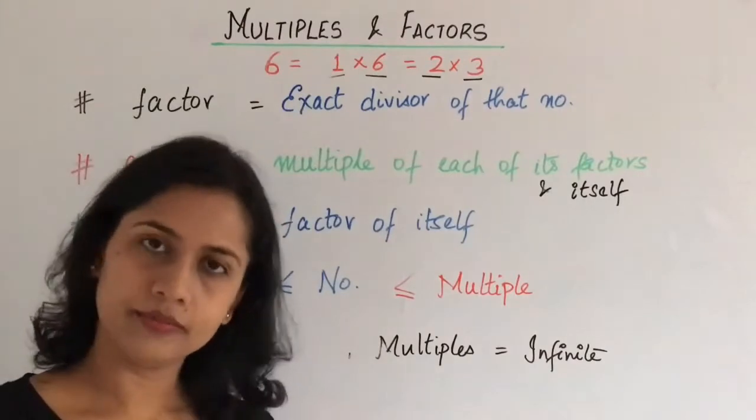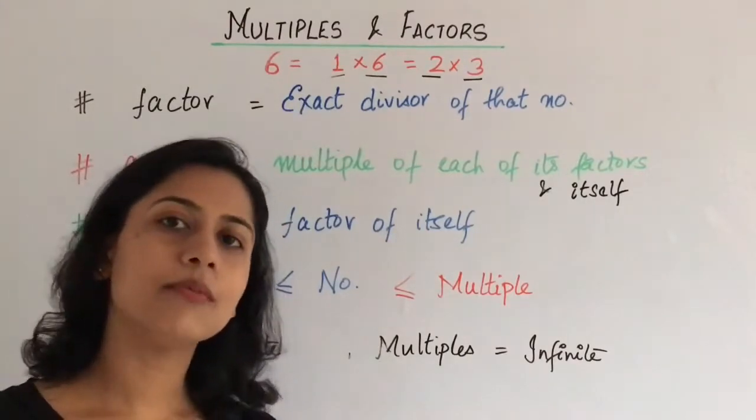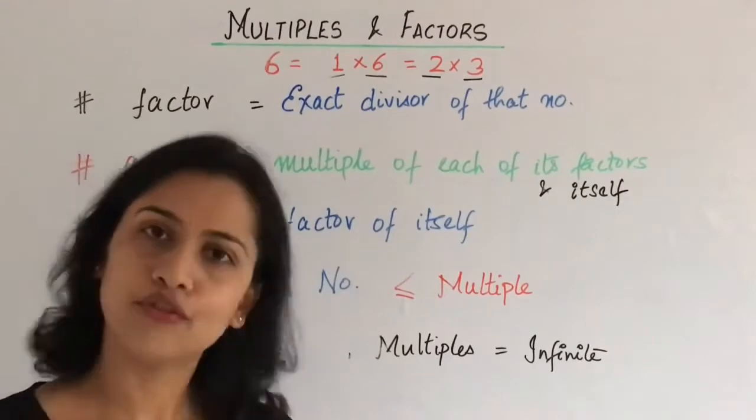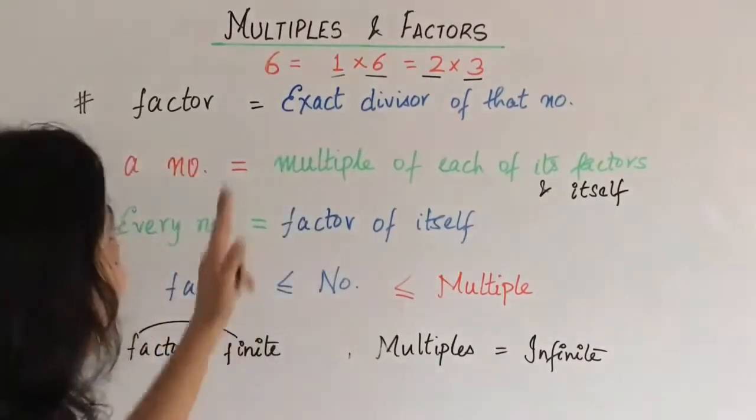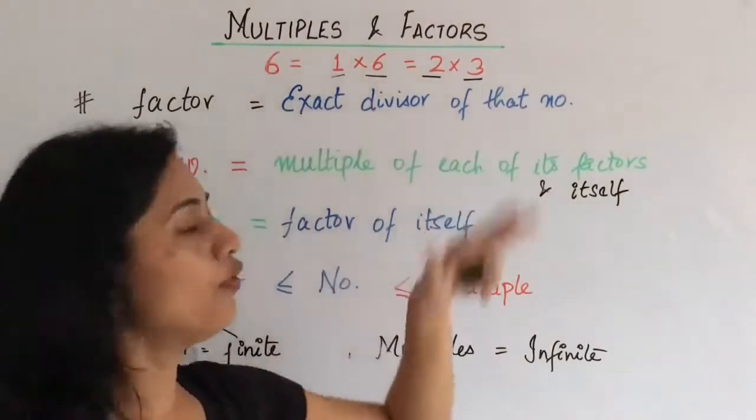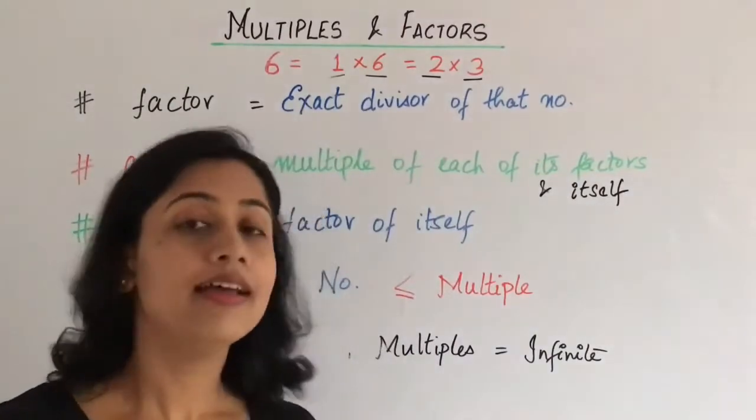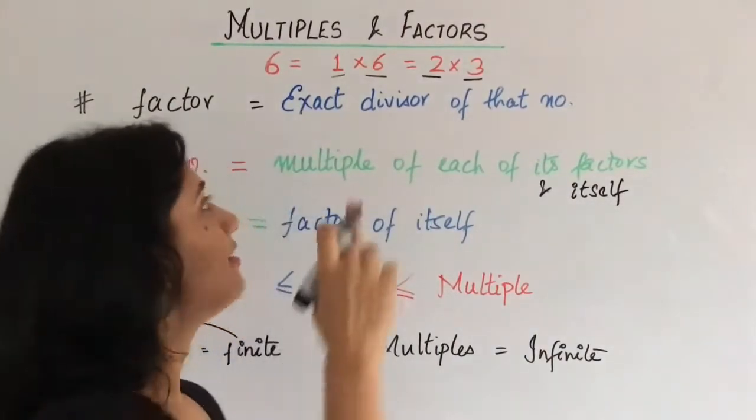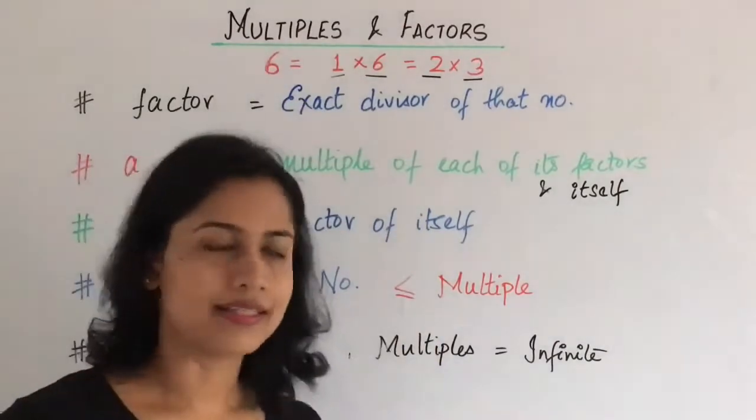Because, 2 into 3, 3 into 2. In sab ko aapas mein multiply karne pe, outcome kya aa raha hai? 6 aa raha hai. Therefore, we can say that a number is a multiple of each of its factors as well as itself. 6 is also a multiple of itself.